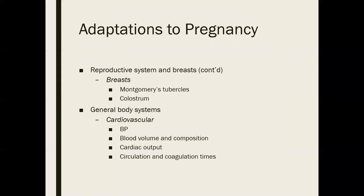During the second trimester, systolic and diastolic blood pressure decrease by about five to ten millimeters due to peripheral vasodilation caused by hormones. We often see women fainting — a very common symptom of pregnancy — due to that change in blood pressure as blood vessels dilate, particularly on change of position. Blood pressure should return to first trimester readings during the third trimester, so it's the second trimester that can become an issue.